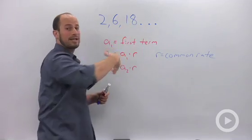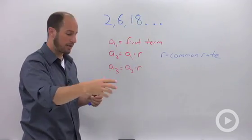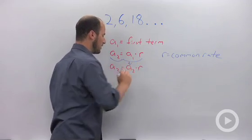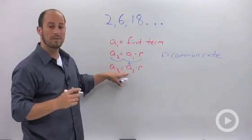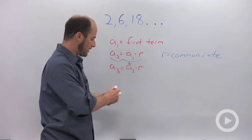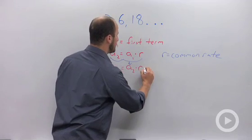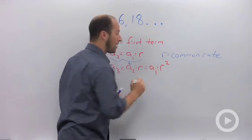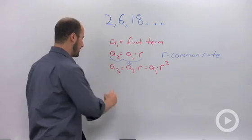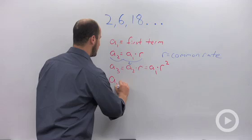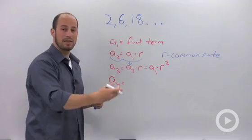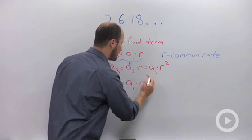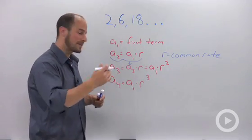But we know that a₂ is actually a₁ times R, so we end up with a₃ equals a₁ times R². Continuing down the row, a₄ is just another rate times the previous term, leaving us with a₁ times R³, and so on and so forth. Eventually we're going to get to our general term aₙ equals a₁.